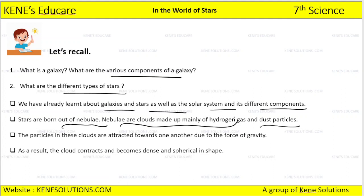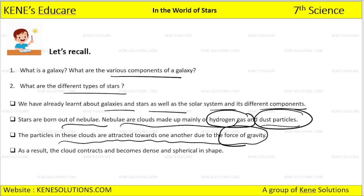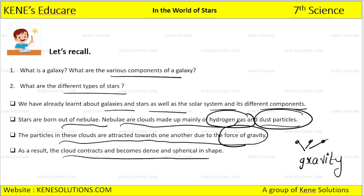Nebula are clouds made up of hydrogen gas and dust particles. The particles in these clouds are attracted towards one another due to the force of gravity. They get together, and the clouds contract and become dense in a spherical shape.